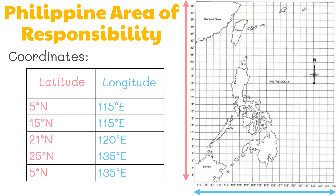If we plot the identified coordinates on the map we will be able to determine the Philippine Area of Responsibility. So let's start plotting the coordinates. First we have 5 degrees north and 115 degrees east, which is right here. Next we have 15 degrees north and still 115 degrees east, here. And 21 degrees north and 120 degrees east, right here. Moving further north we have 25 degrees and further east we have 135 degrees, which coincide here. And lastly, 5 degrees north and still 135 degrees east, here.